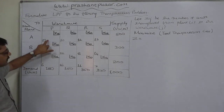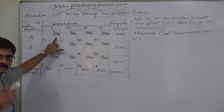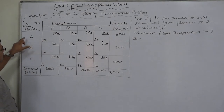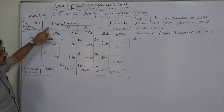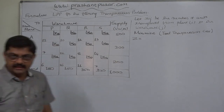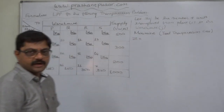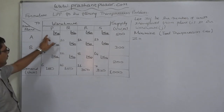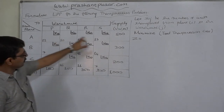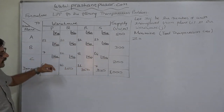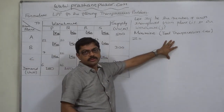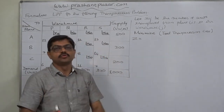If we multiply the cost per unit by the number of units, that will be the total cost of transporting from that supply point to that destination. For example, x11 multiplied by 12 gives the total cost of transporting x11 units from plant A to warehouse P. Similarly, we calculate the total cost for all cells, and the grand total of all these costs will be the total transportation cost, which we want to minimize.